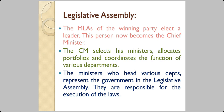The MLAs of the winning party elect a leader, and this person becomes the chief minister. The chief minister then selects his ministers, gives them portfolios, and coordinates the functioning of various departments — for example, one minister for agriculture, one for health, one for education, one for public works, and so on.